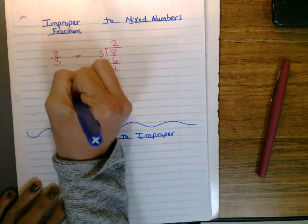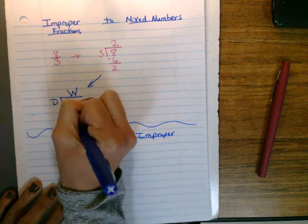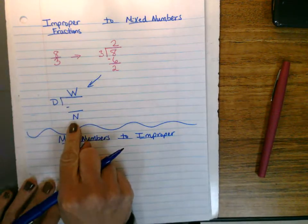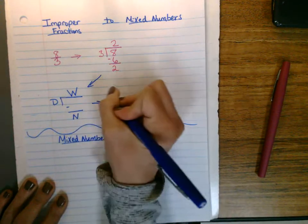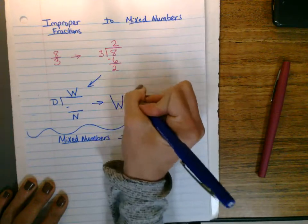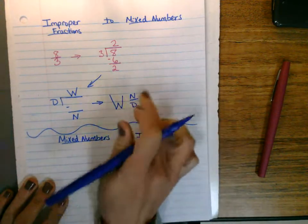But right on top, you will find your whole number, and down here where the remainder is, you will find your numerator. So then you could set up your whole number, numerator, denominator, and we just use this as a model for each time.